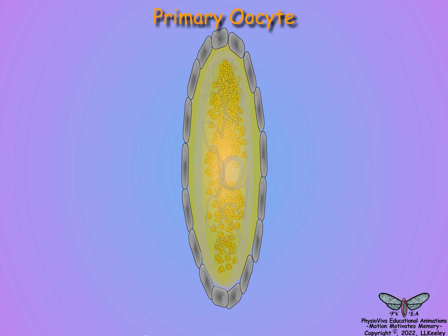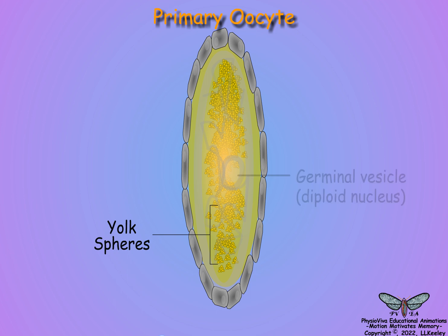Insect eggs are central lecithal, which means the egg has centralized yolk. The yolk provides the chemicals for the energy and structural needs of the developing embryo. The oocyte nucleus is located in or near the middle of the yolk.